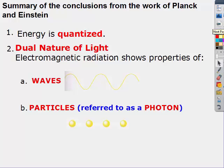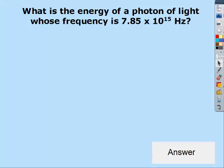Planck and Einstein came up with the idea that energy is quantized and that light has a dual nature. Electromagnetic radiation can act as waves and it can also act as particles. When light acts as a particle, it's referred to as a photon. Let's calculate the energy of a photon of light whose frequency is 7.85 × 10¹⁵ hertz.